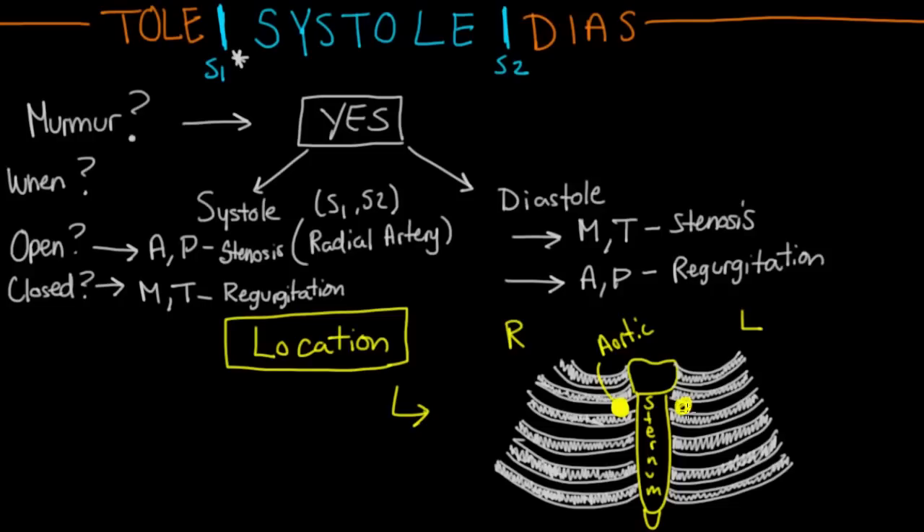Another location is again in the second intercostal space, but now it's on the left side. This is the pulmonic area, also known as the left upper sternal border. The third place where you usually listen is here. This is the fourth intercostal space, and this is called the tricuspid area.